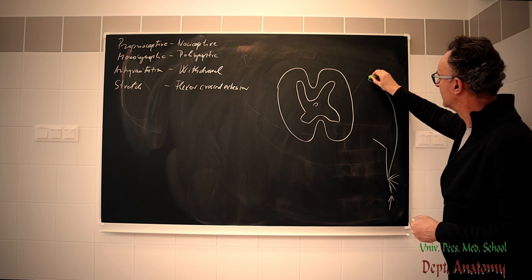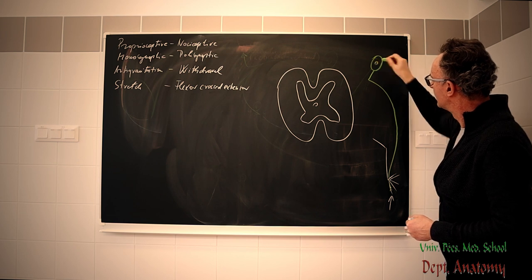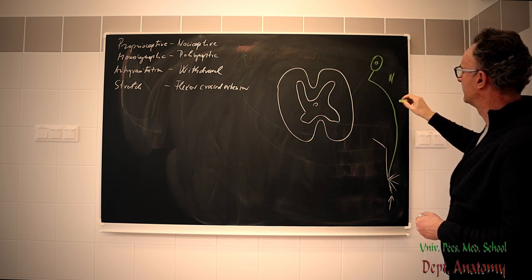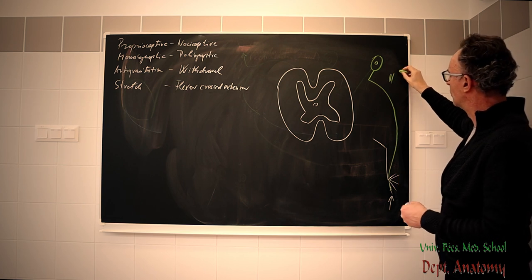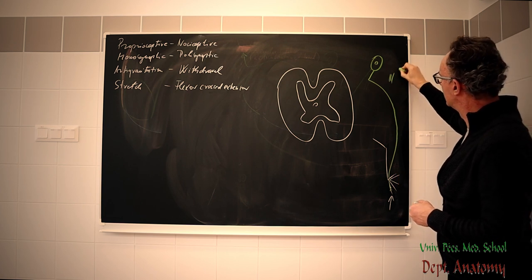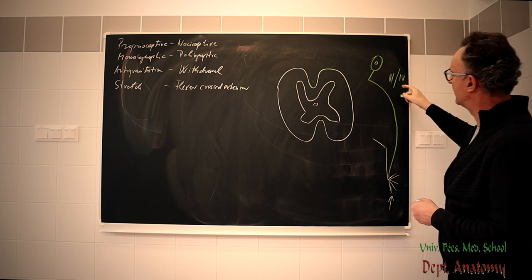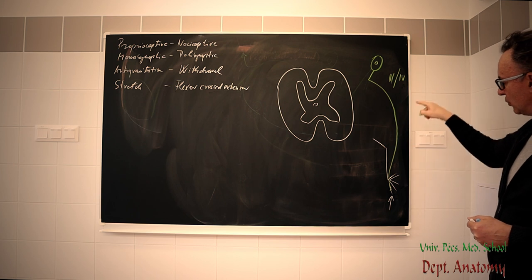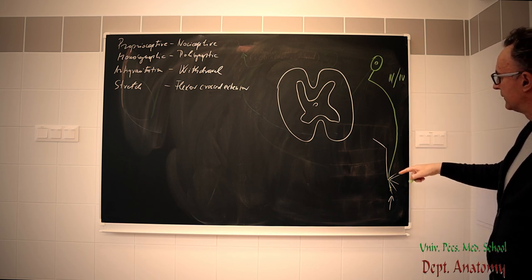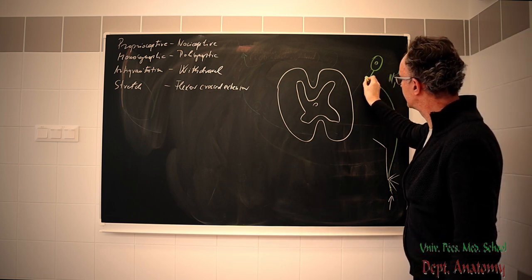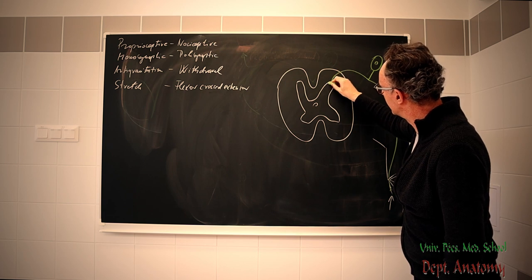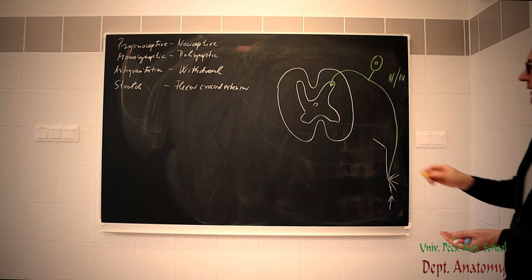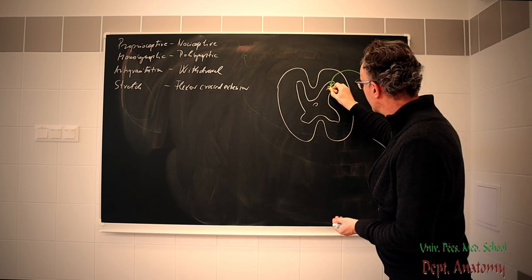We have afferent nerve fiber. This can be either type 3, for acute pain or cold sensation. It can be type 4, which is unmyelinated. This is with other classification. This is C fiber, for chronic pain and warm sensation. And the central process enters the CNS and terminates on interneurons. At least on one interneuron.